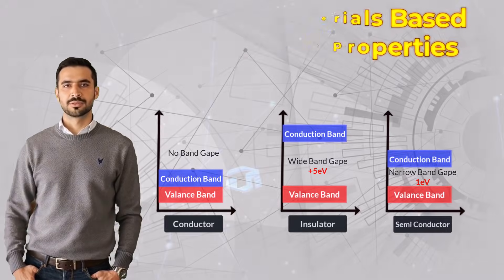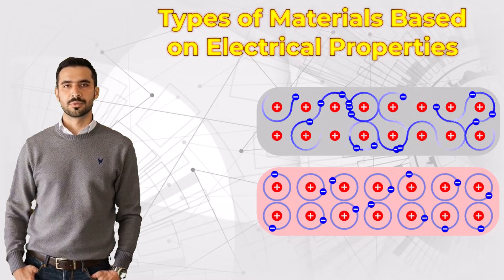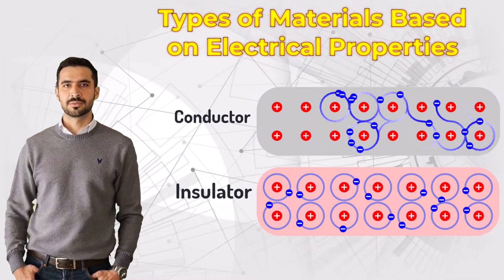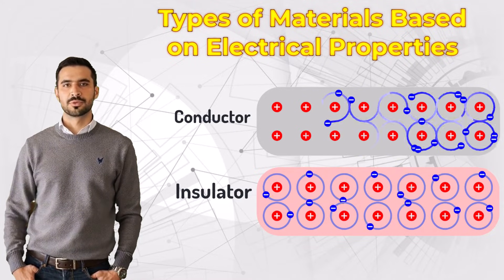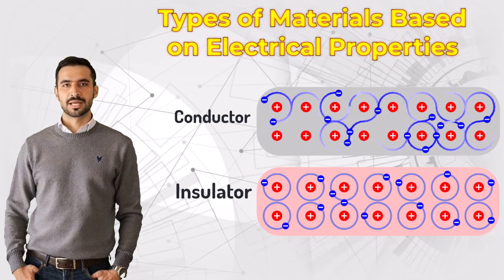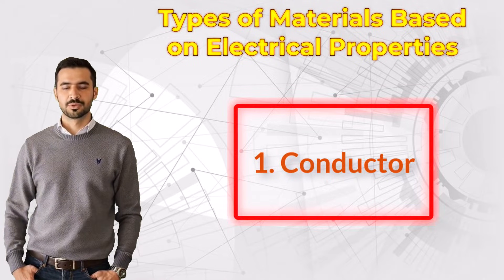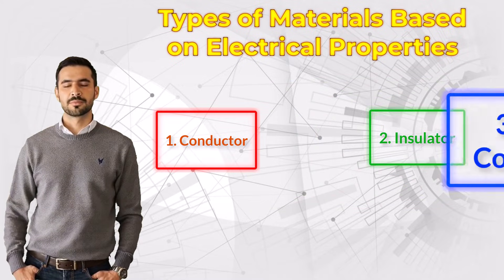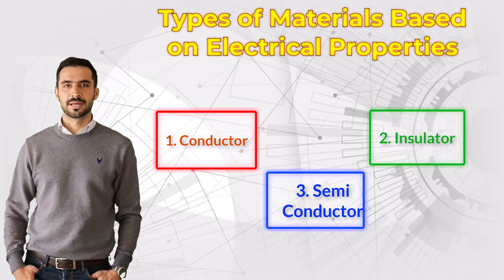Let's start with the basics. Electrical properties are what determine whether a material can conduct electricity or block it. In simple terms, it's all about how easily electrons can move through the material. Based on these properties, materials are classified into three categories: conductors, which allow electricity to flow freely; insulators, which block the flow of electricity; and semiconductors, which fall somewhere in between, depending on the conditions.